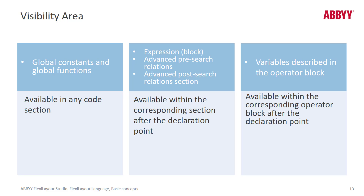Let's speak of the visibility area. Global Constants and Global Functions are available in any code section. I showed you that database connection global constant. Whereas Expressions, Blocks, Advanced Pre-Search Relations, and Advanced Post-Search Relations sections are available within the corresponding section after the declaration point for variables. And variables described in the operator block are available within the corresponding operator block after the declaration point.